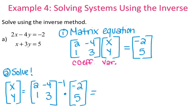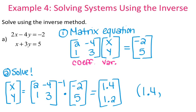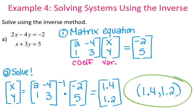The calculator gives you 1.4 and 1.2. So your solution to this system is the ordered pair where x is 1.4 and y is 1.2. You can use the decimals since they terminate and don't go on forever. That's just another way to solve systems instead of RREF, substitution, or elimination.